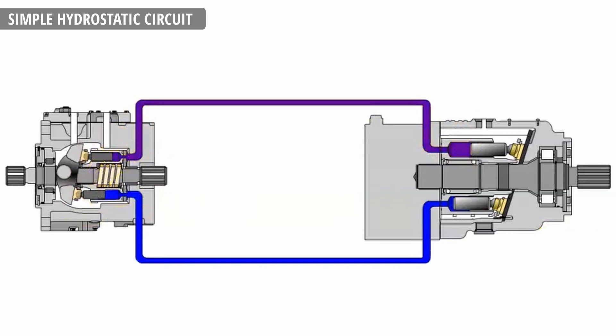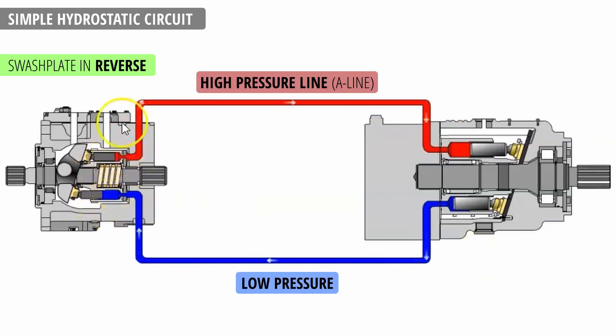If we push the joystick to the opposite direction, let's say we're jacking down, the swash plate pivots to the other side and high pressure line is in the other side. That turns our motor to the opposite direction.